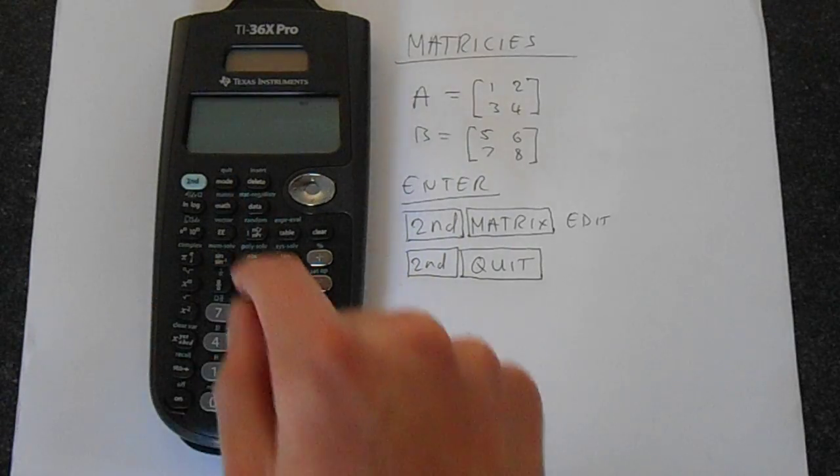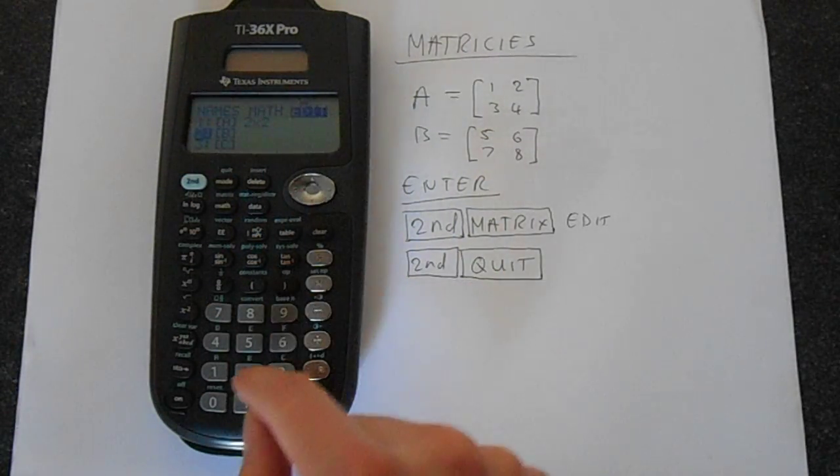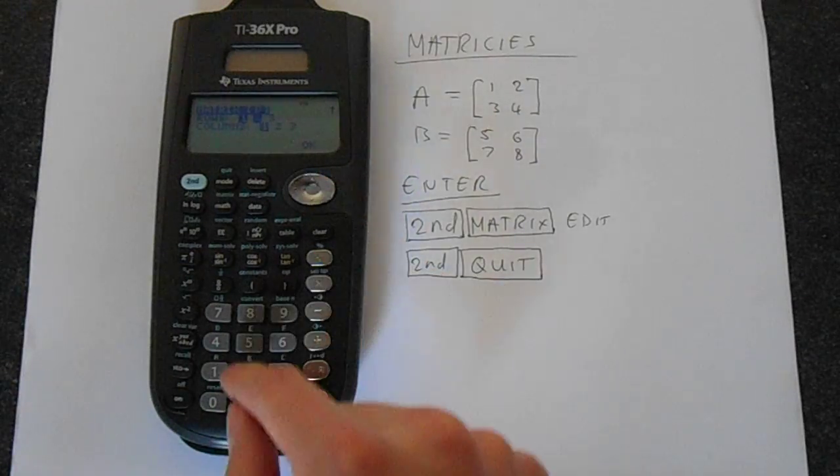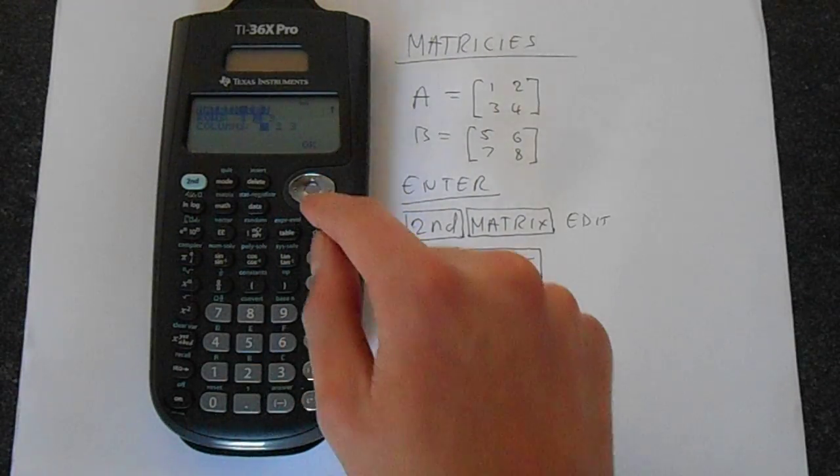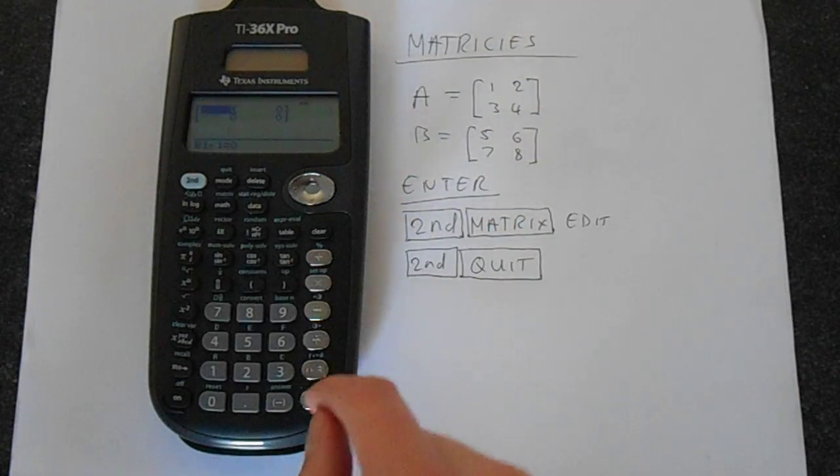So second function quit and then we go back into it. Second function matrix, go to edit and then we go to 2. So we're editing matrix B now and just work your way through this menu.